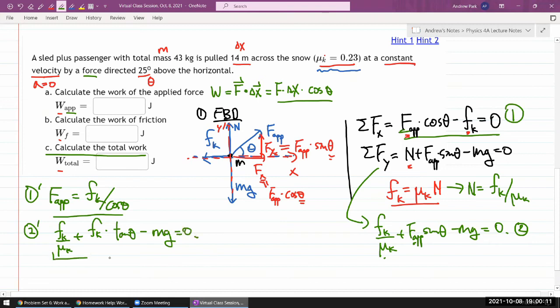And I can collect like terms here. So this is friction force times one over mu k plus tangent theta minus mg. And I can solve for friction force here. My friction force is, all this is equal to zero, mg divided by tangent theta, just swapping through it there, I don't like this coming first, plus one over mu k. I'm done. So that'll give me the friction force.